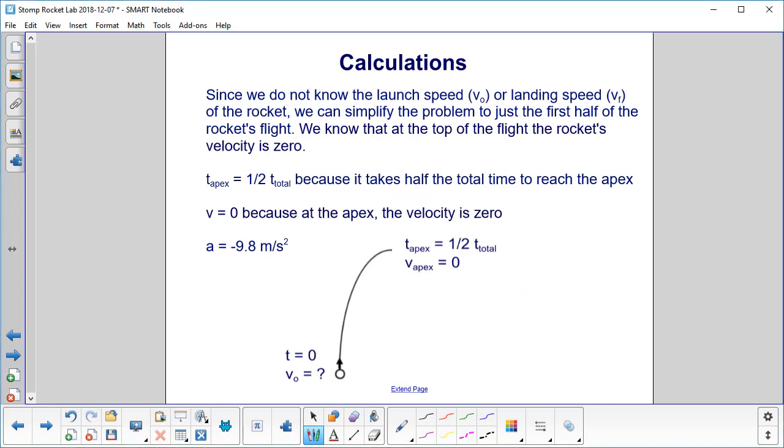We do not know the launch speed, v0, or the landing speed, vf. And of course the speed is the same, taking off and landing. So we're going to simplify the problem to just the first half of the rocket's flight, where it leaves the ground and when it hits the apex point. We know that at the top of the flight the rocket's velocity is zero, so v_apex is zero. We also know that t_apex is half of the total time. And we're ignoring air friction there, which would change that result. And also, this means that it has to take off and land at the same point to have that symmetry.